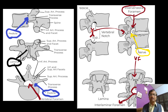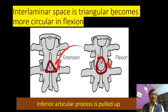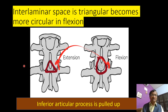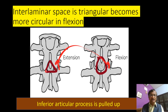Here you can see the intervertebral foramen or vertebral notch. The interlaminar space is triangular and becomes more circular in flexion. The inferior articular process is pulled up in flexion — that is why we flex the patient. The interlaminar space, which is triangular, becomes more open and more circular in flexion.